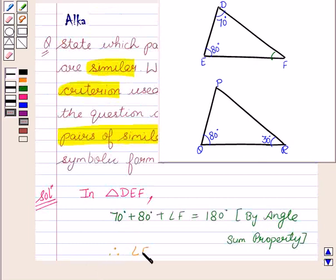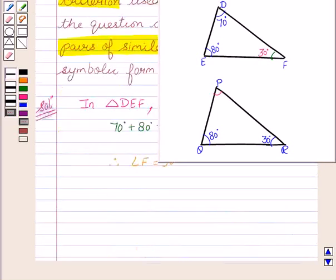Therefore we get angle F equal to 30 degrees. Now, we will consider triangle PQR.